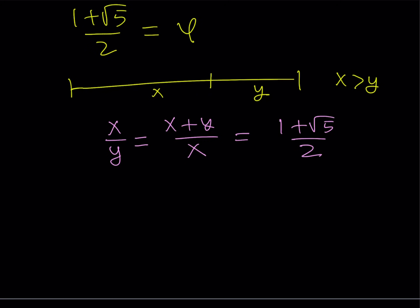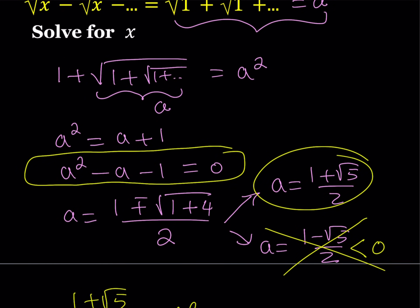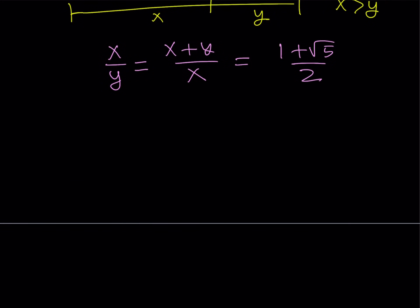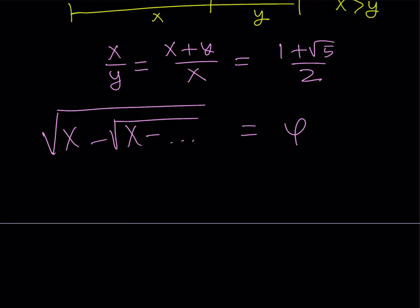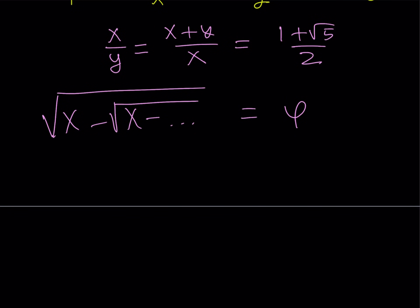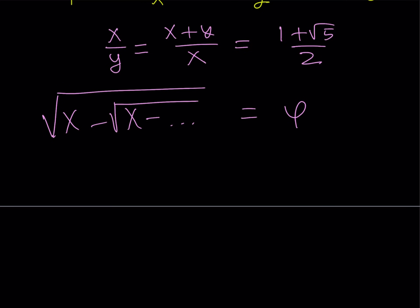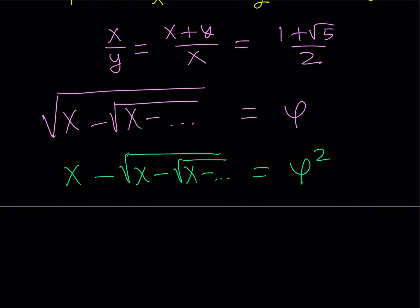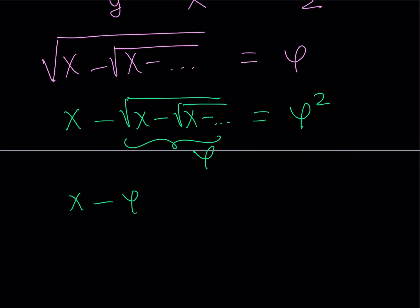Let's go ahead and solve the rest of this problem. I have the square root of x minus the square root of x minus dot dot dot going on forever, and now we know this equals phi. To find x, I'll use exactly the same approach: square both sides. That gives x minus the square root of x minus dot dot dot equals phi squared. The expression under the radical is nothing but phi, so we get x minus phi equals phi squared.